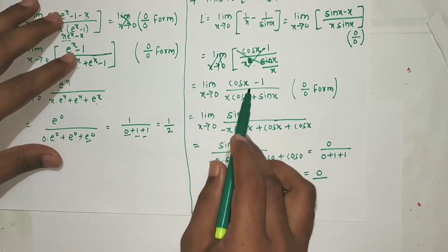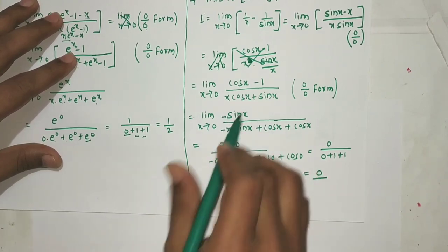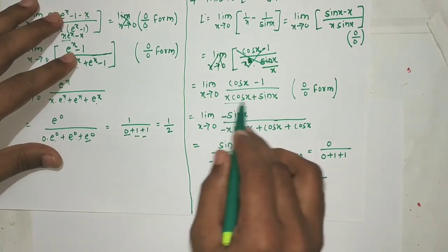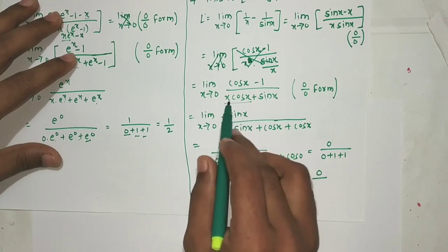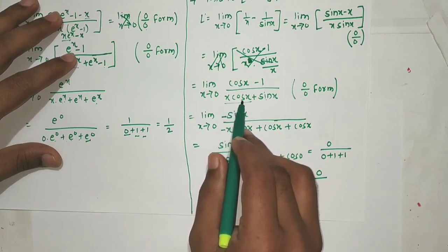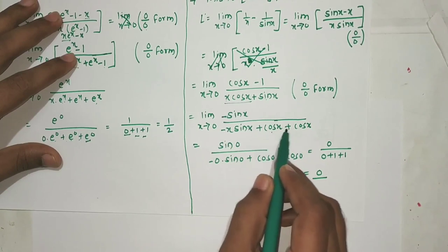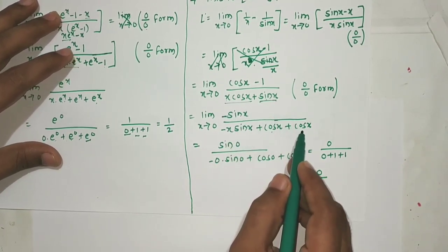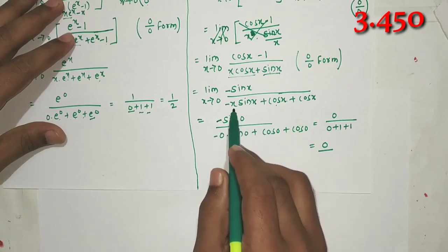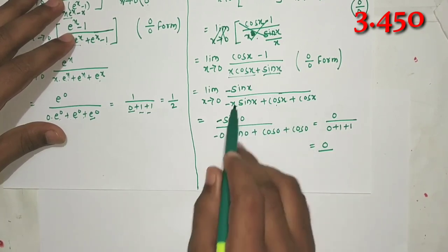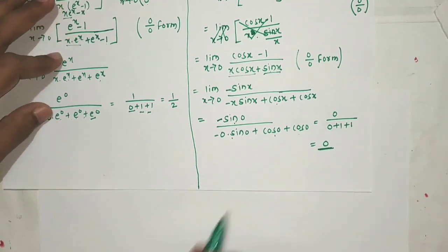Applying L'Hôpital's rule again: derivative of (cos x - 1) is -sin x; derivative of (x·cos x + sin x) by product rule gives (-x·sin x + cos x + cos x) = -x·sin x + 2cos x. Putting x=0: numerator = -sin(0) = 0; denominator = -0·sin(0) + cos(0) + cos(0) = 0 + 1 + 1 = 2. So we get 0/2 = 0. This is our final limit. That's all for now, thank you.